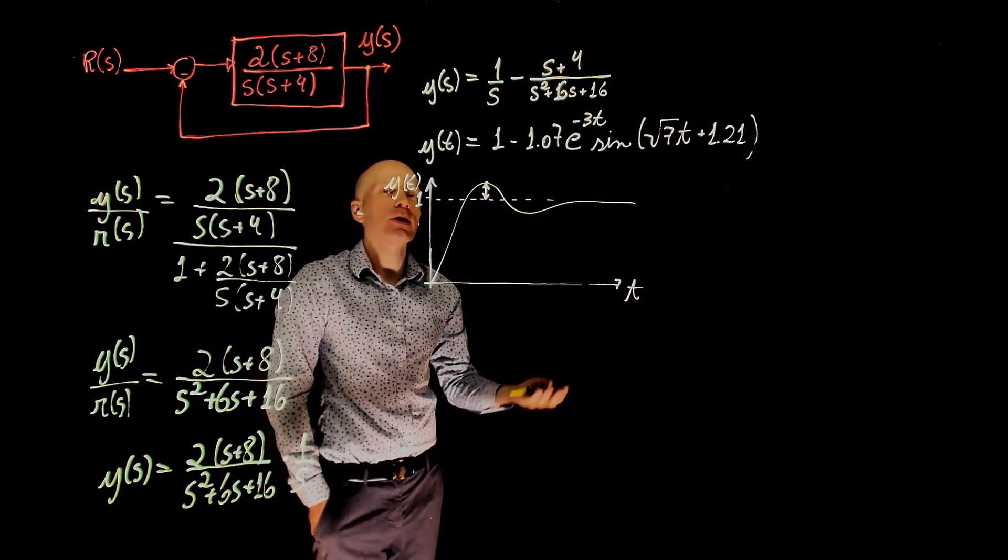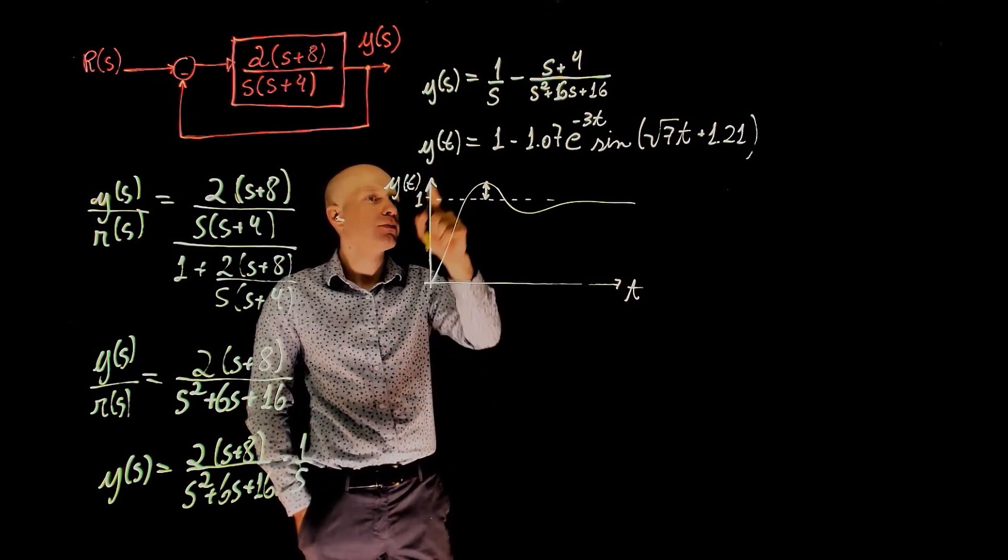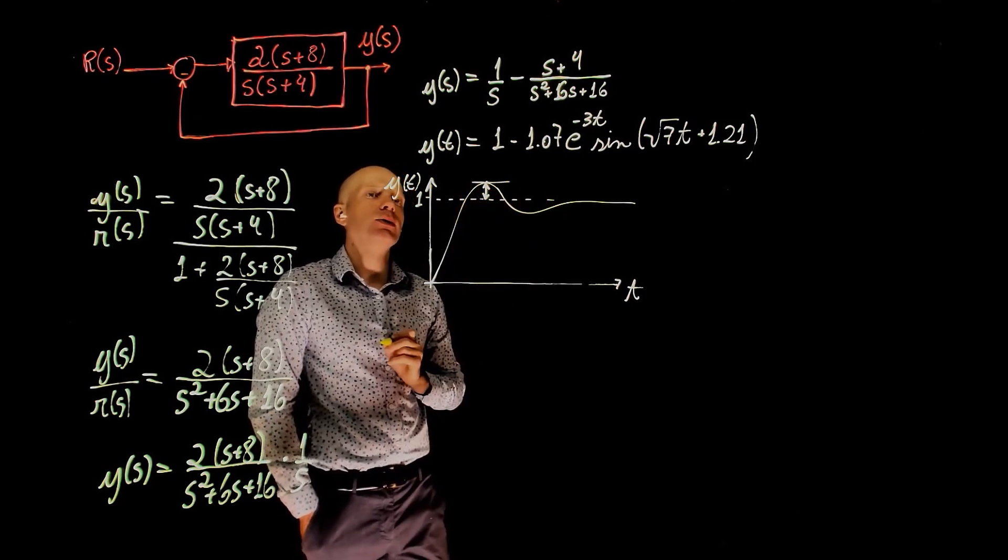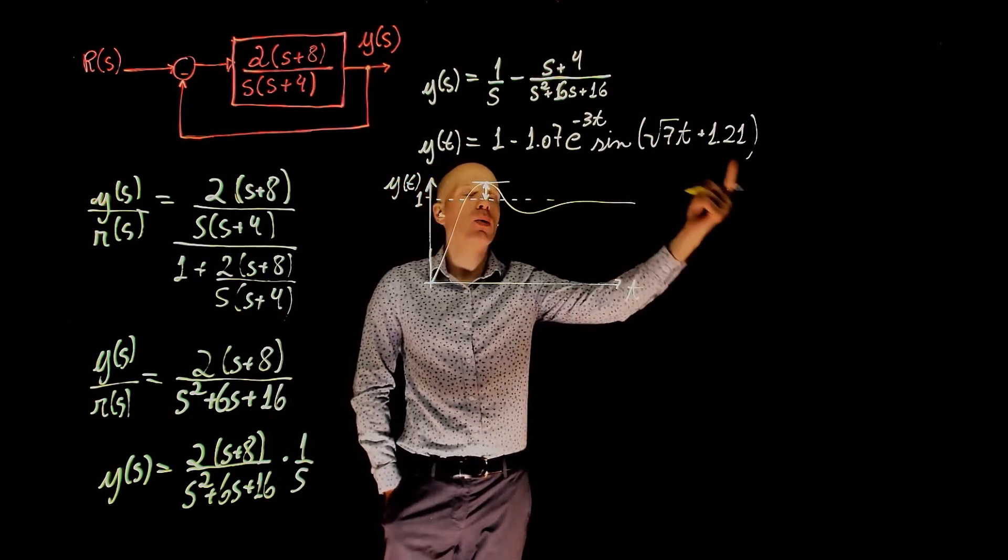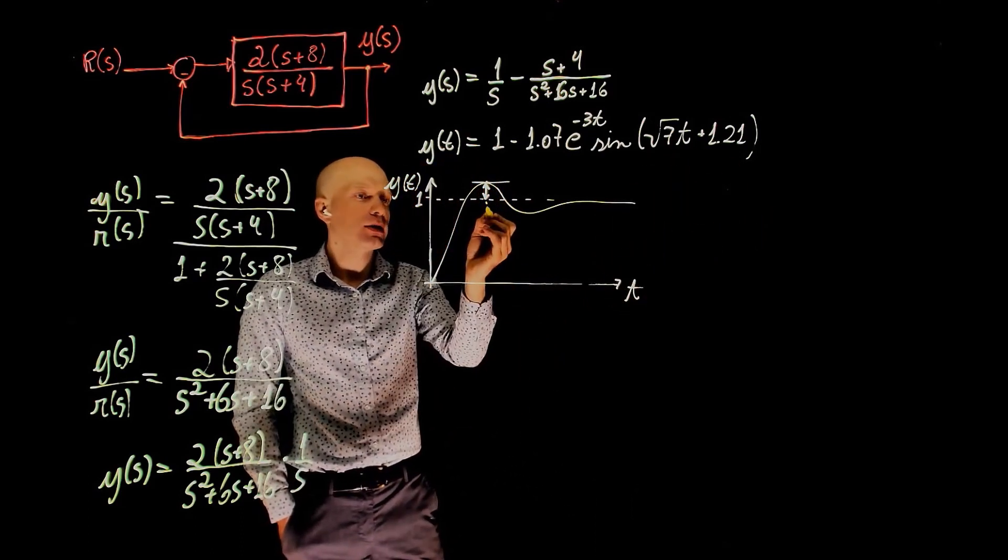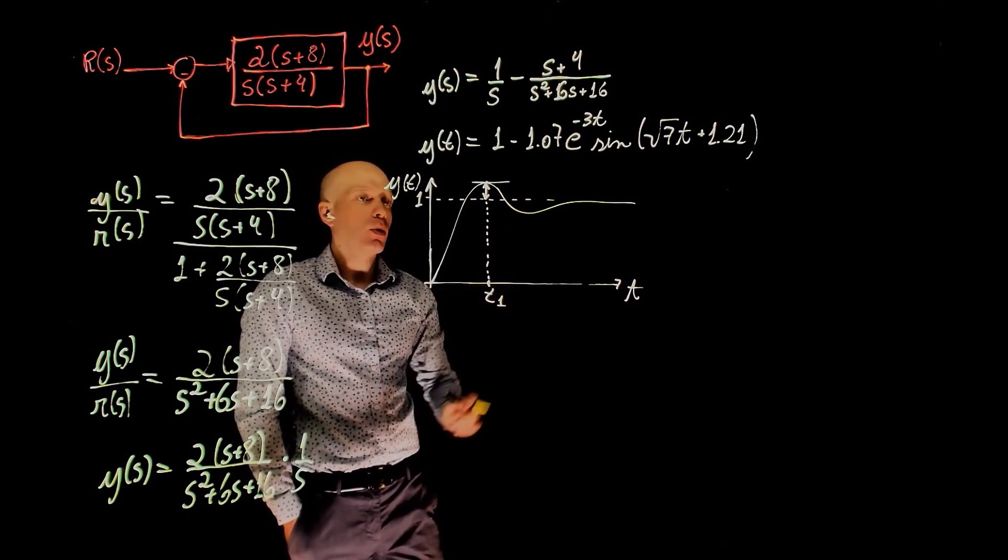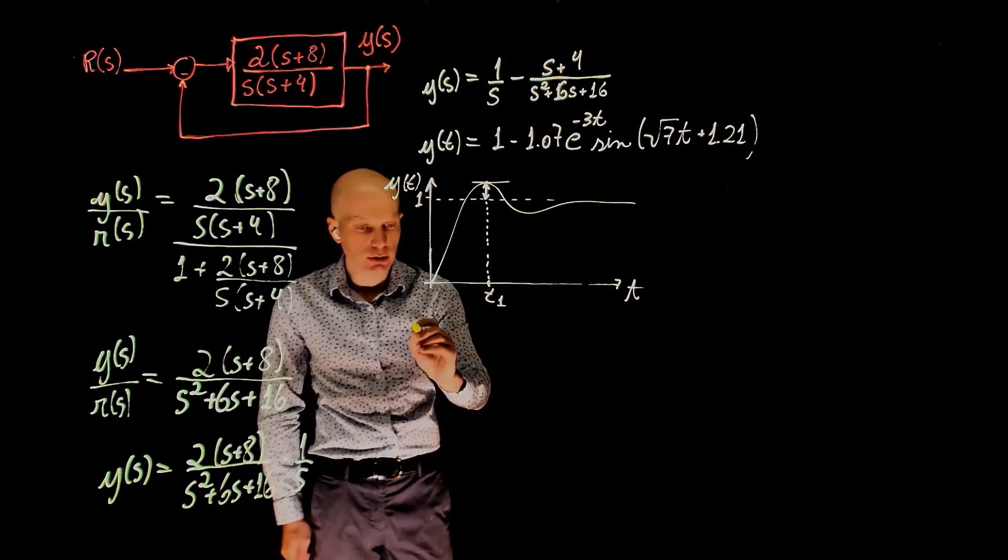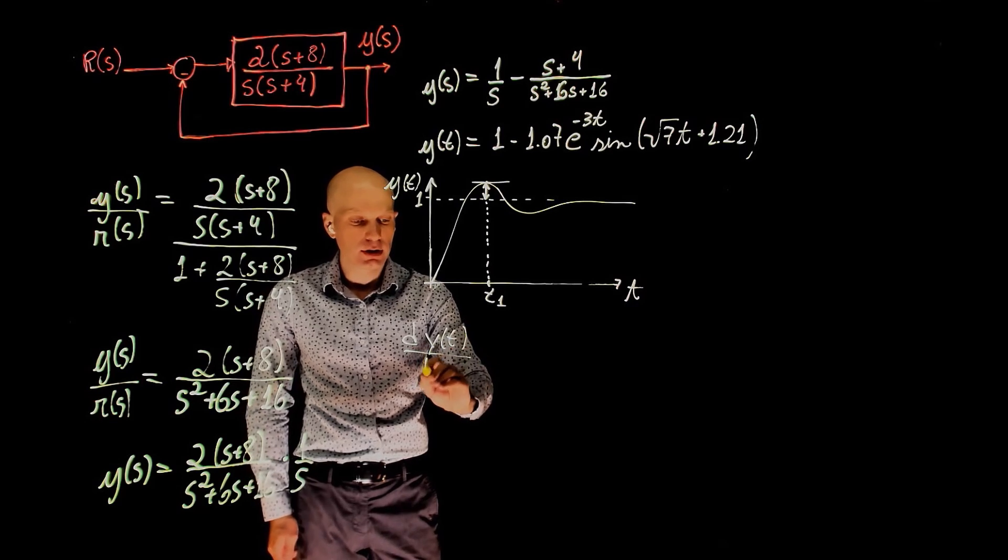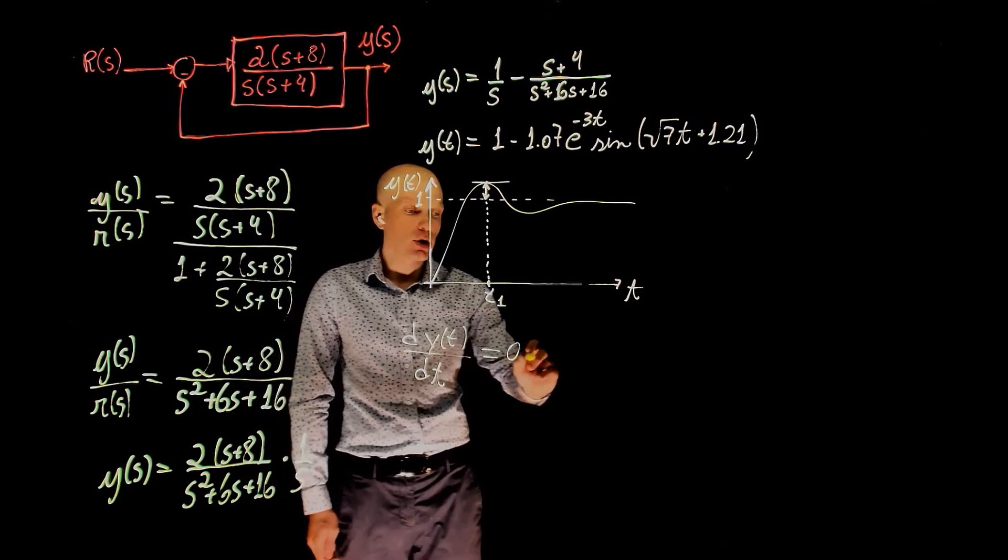How do we find the maximum of a function? From calculus, you'll remember that if you take the derivative of y of t, that's the slope, and the slope here is 0. So if you now find the derivative of this equated to 0, and solve for t, we'll find the time t1 when this maximum value occurs. So we now take dy of t, dt, the partial derivative, we set that to 0, and solve for t.